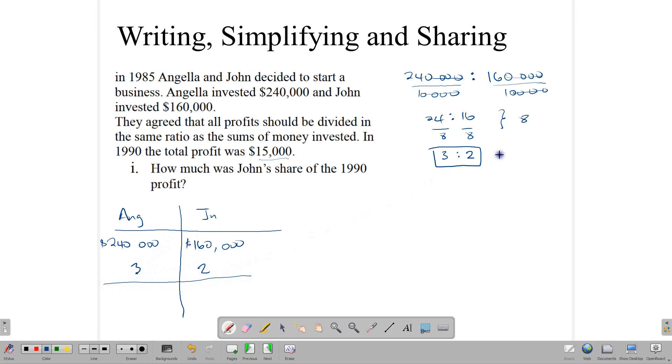So the simplest form of this ratio, $240,000 to $160,000, is 3 to 2. The money is shared in the ratio of 3 to 2. When we add 3 plus 2, we get 5. That tells us that Angela will be getting 3 fifths or 3 parts of the profit, and John will be getting the other 2 parts or 2 fifths of the profit.